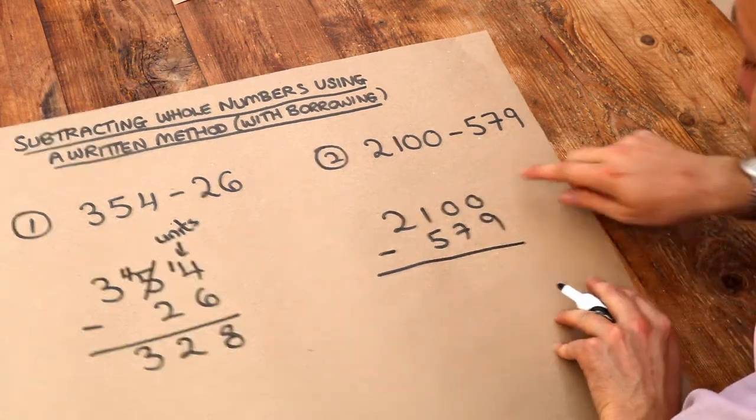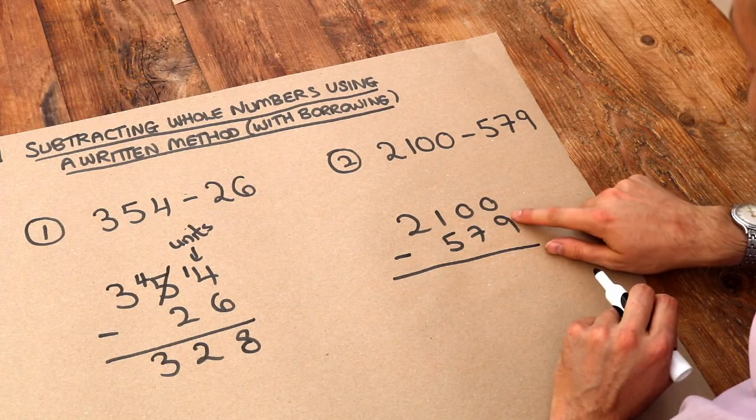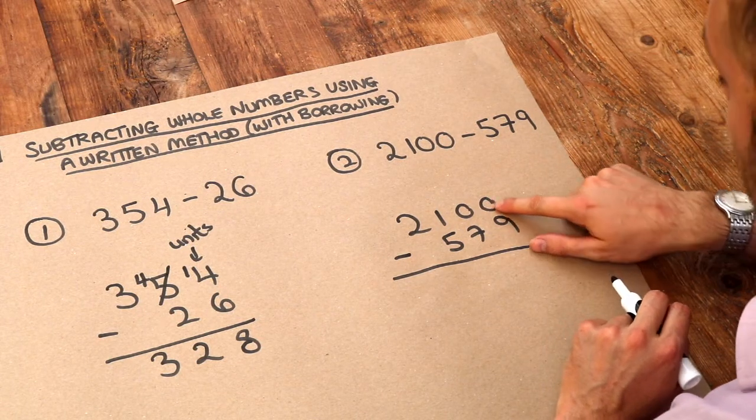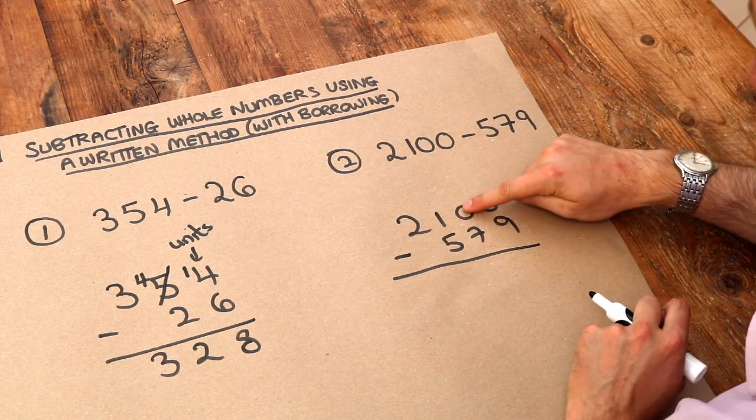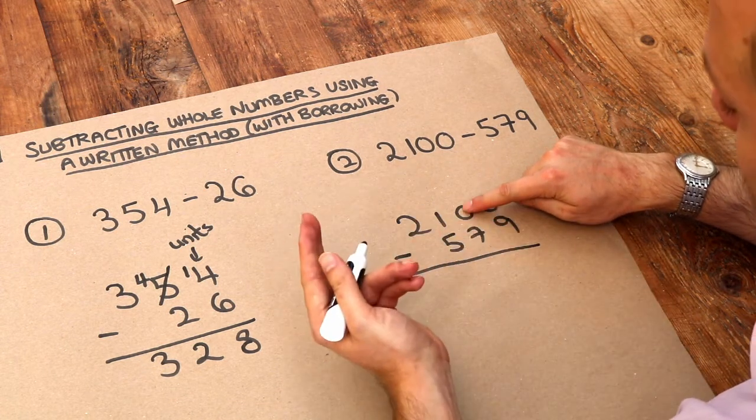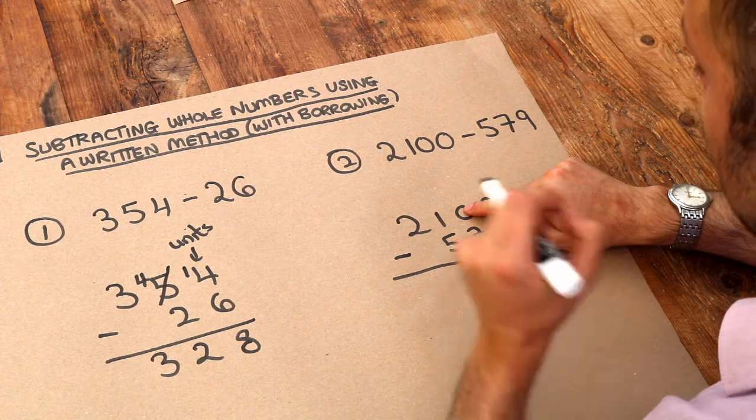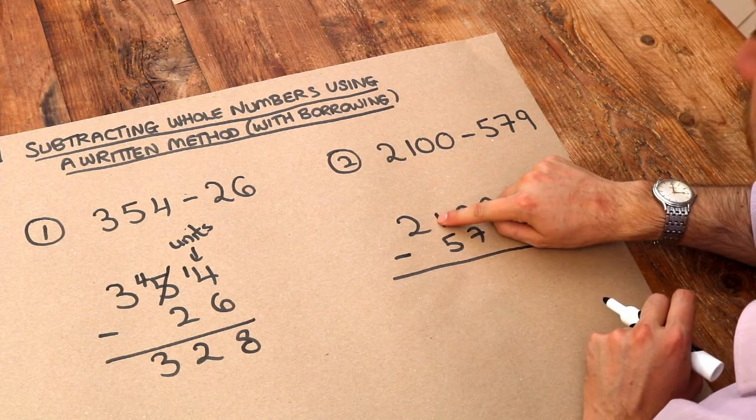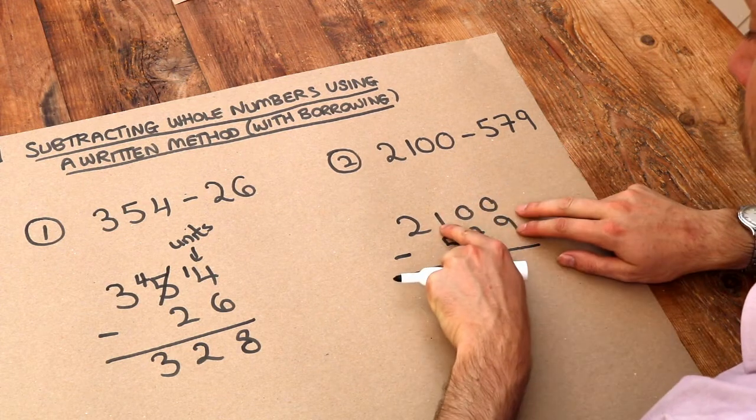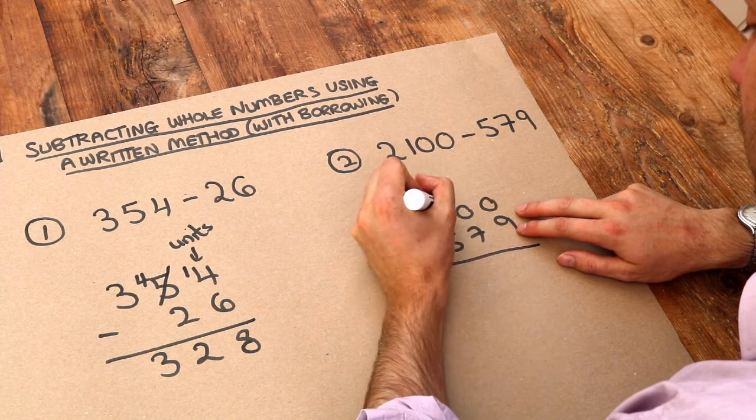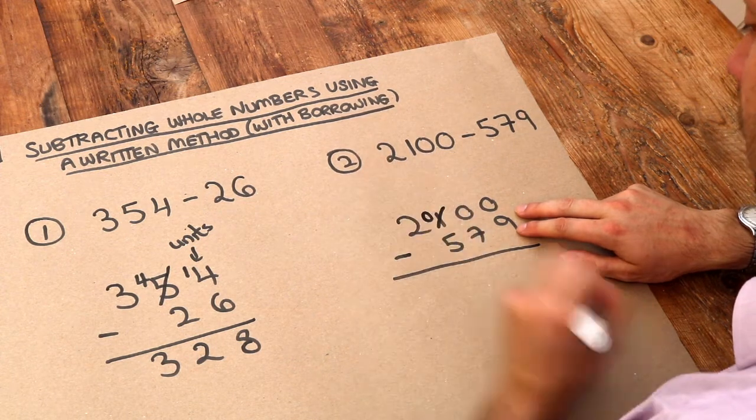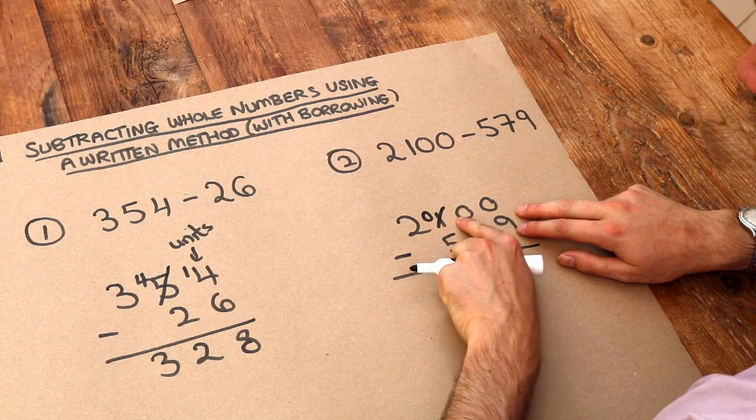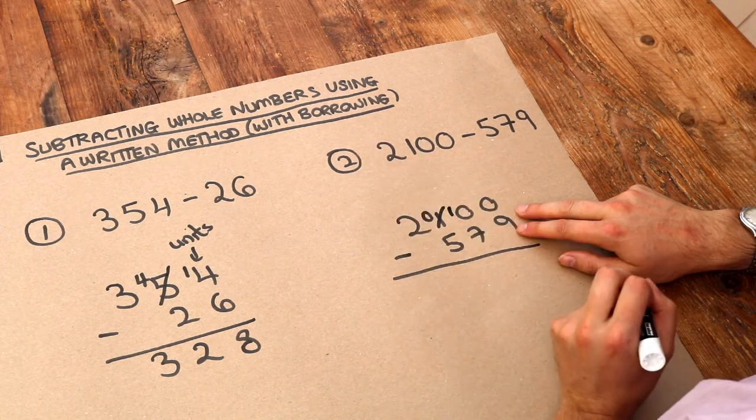Now we try to do 0 minus 9 in the rightmost column, we can't do that, so we're gonna have to borrow from that digit to the left. However there's nothing to borrow there, that's a 0. So in this scenario we're gonna have to borrow from the one left of that. We're gonna borrow here, that 1 gets reduced by 1 to 0, and that allows us to put a 1 on the number to the right, so we've now got 10 here.